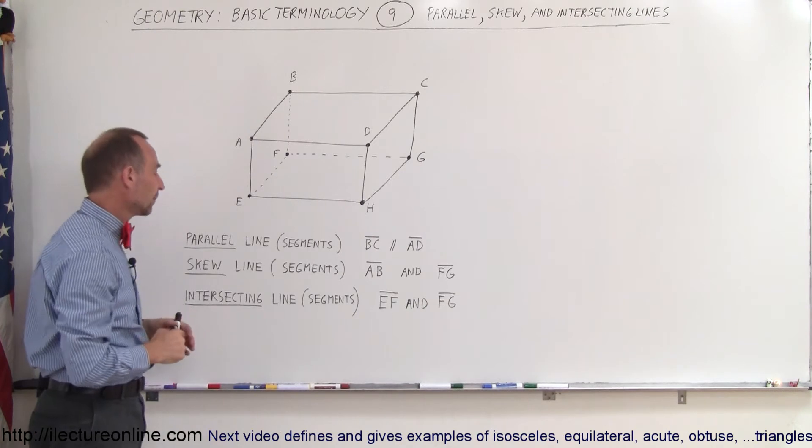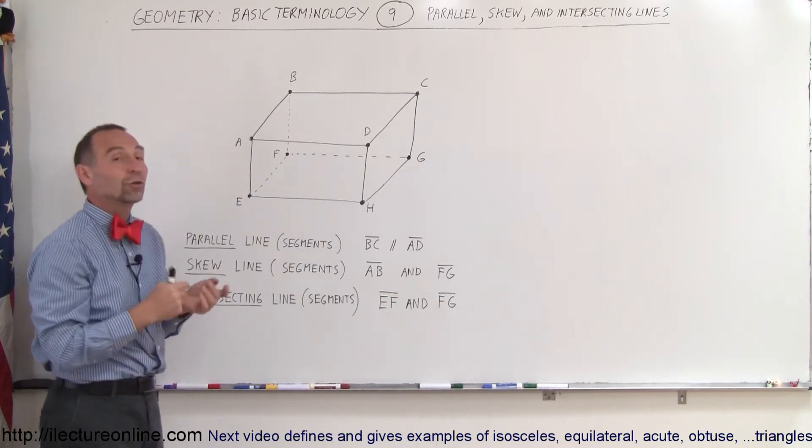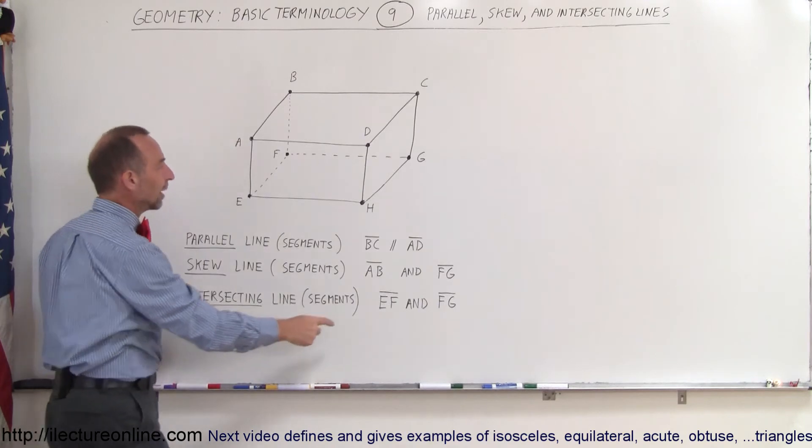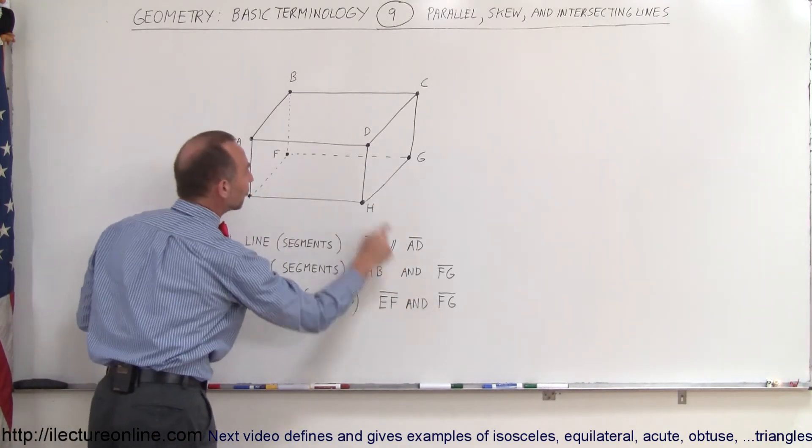And finally, intersecting lines are where two lines actually intersect at a common point. For example, line segment EF and line segment FG.